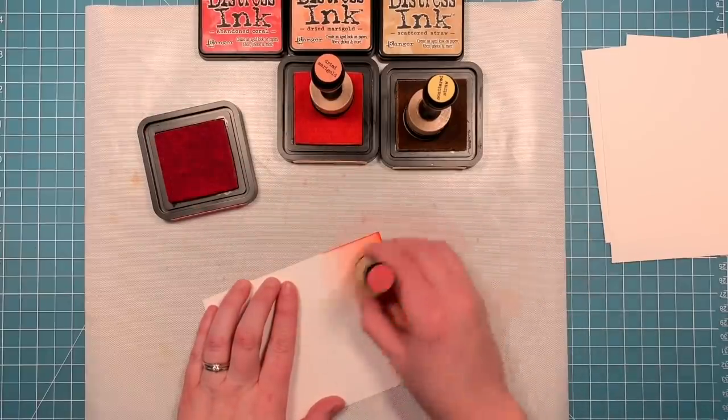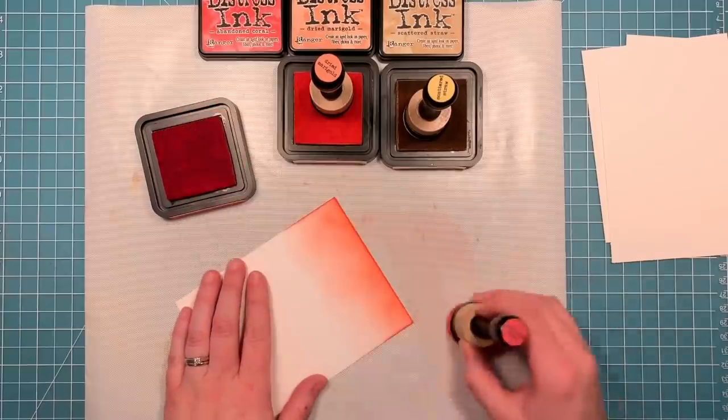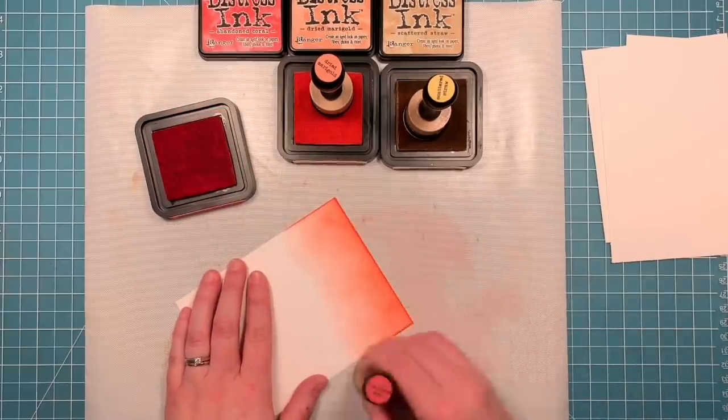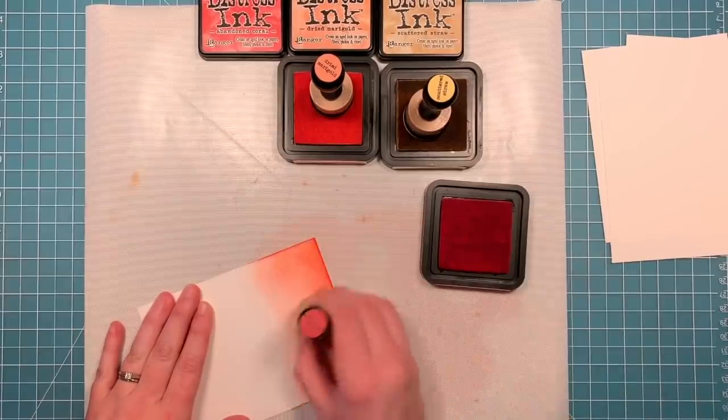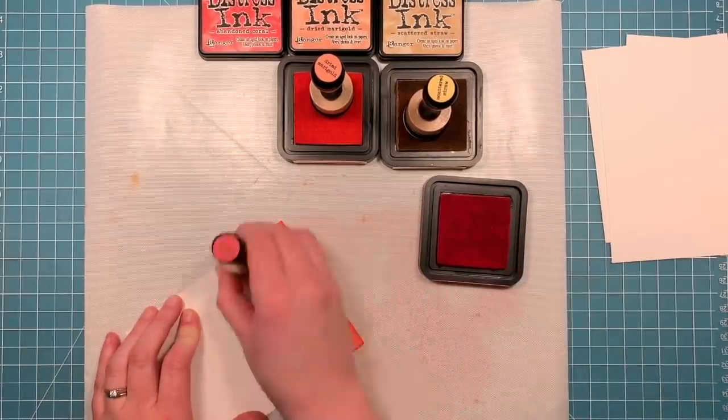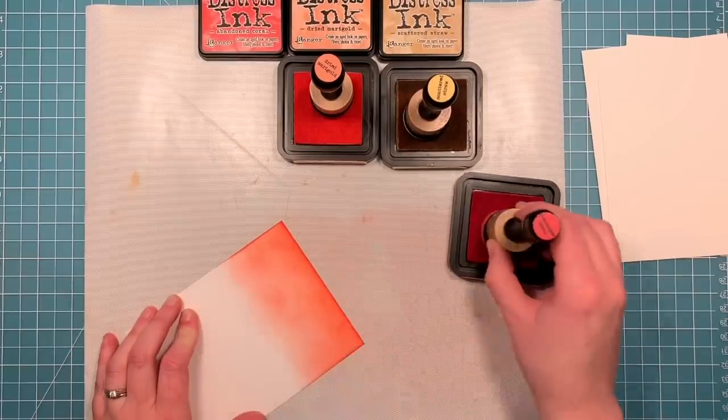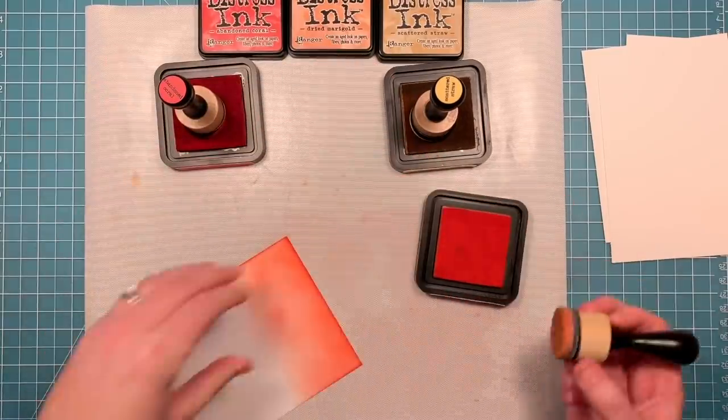I'm just going to speed things up a little bit so you can see this whole process. I'm just putting the ink on a little bit at a time using a blending tool and starting off my paper and then pulling onto the cardstock. I try to vary the direction that I go, clockwise and counterclockwise.